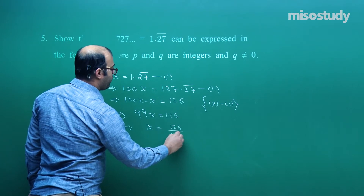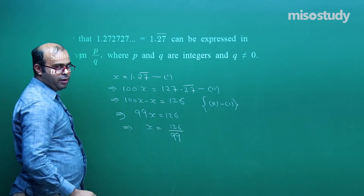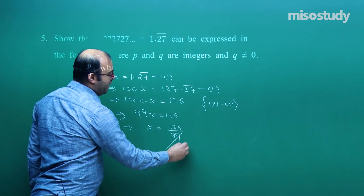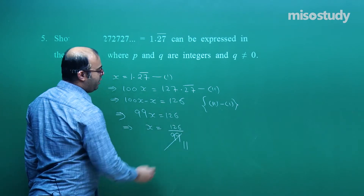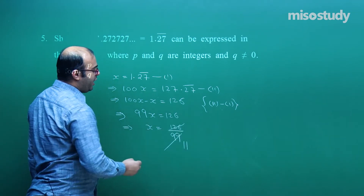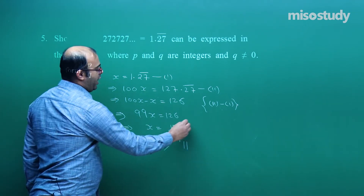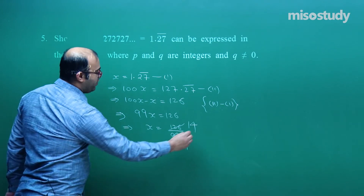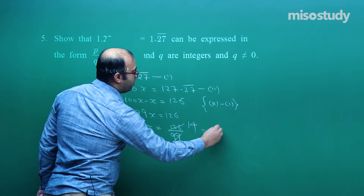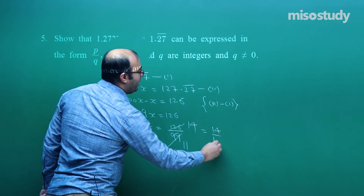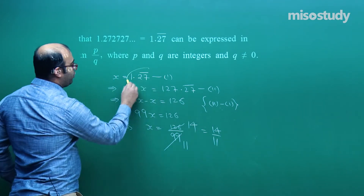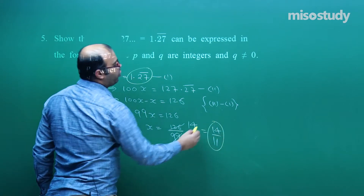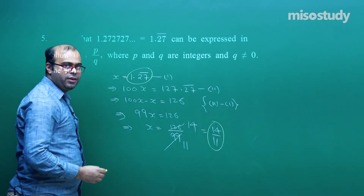So x = 126/99. Dividing by the common factor 9: 9 × 11 = 99 and 9 × 14 = 126, so x = 14/11. Therefore we can express 1.27̄ as 14/11.